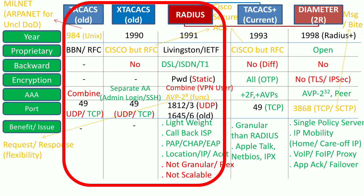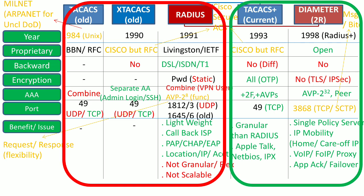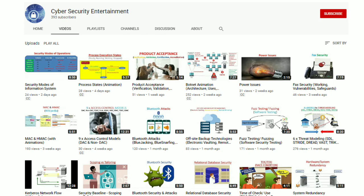Overall, TACACS, XTACACS, and RADIUS are less efficient and less secure than TACACS+ and Diameter. This was all from my side — please stay connected to my channel, like this video for encouragement. Thank you.